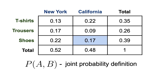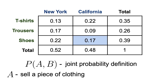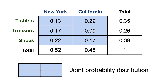All of these events are mathematically defined as P(A, B), where A is the first event — which in our case is selling one of the pieces of clothing — and B is the second event, which is selling at a certain location. So all of these probabilities are joint probabilities, and if we were to put them all together, they would form the joint probability distribution of selling a piece of clothing at a certain location, indicating how likely it is to sell a specific piece of clothing at a specific location.